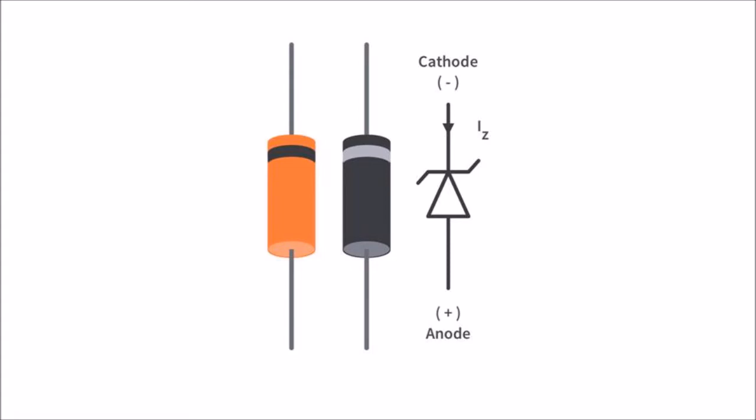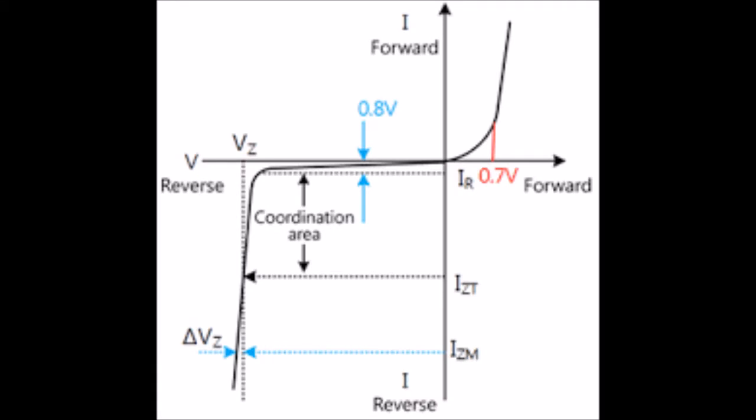While regular diodes get damaged when the voltage across them exceeds the reverse breakdown voltage, the Zener diode works exclusively in this region. The depletion region in the Zener diode goes back to its normal state when the reverse voltage is removed. This particular property of Zener diode makes it useful as a voltage regulator.